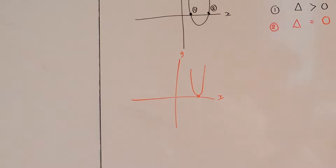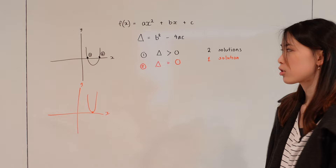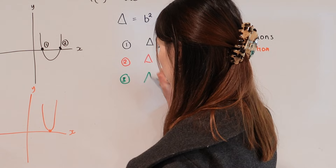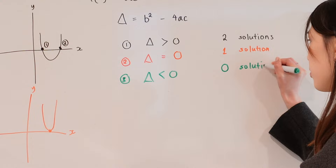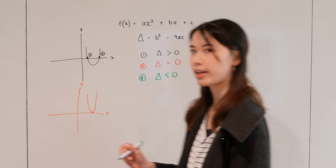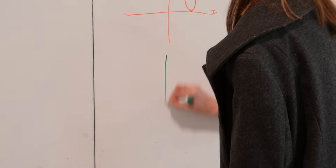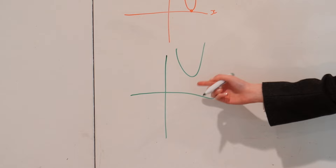Finally, if your discriminant is less than zero, this means that you will have zero solutions. And in terms of your graph, this means that your parabola won't touch the x-axis at all. Can you see how that doesn't touch the x-axis there?